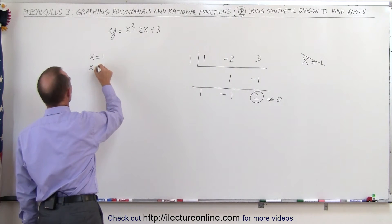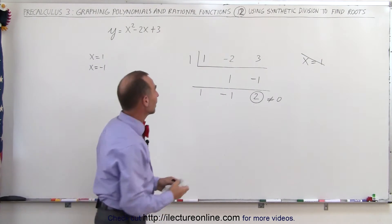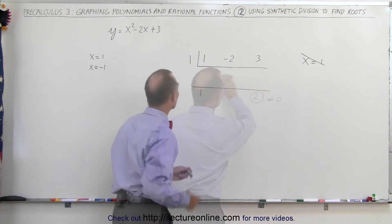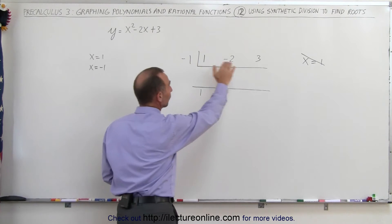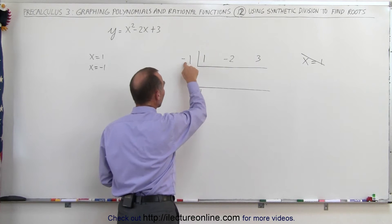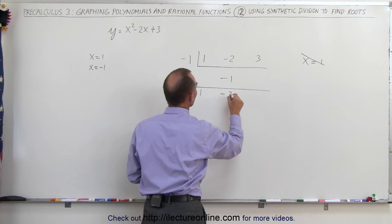How about x equals negative 1? So we reset ourselves, we clean everything off, and so now we're going to try x equals negative 1. Again, of course, you have the coefficients, you drop the first one down. Negative 1 times negative 1 is negative 1, add the two together, you get negative 3.